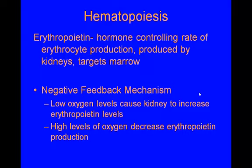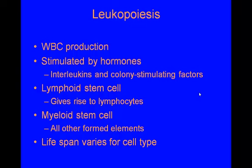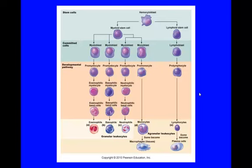Leukopoiesis is white blood cell production, stimulated by hormones such as interleukins and colony stimulating factors. The lymphoid stem cell gives rise to only lymphocytes. The myeloid stem cell makes all other white blood cells, and the lifespan varies for each cell type. The hemocytoblast at the top gives rise to the myeloid stem cell on the left — making eosinophils, basophils, neutrophils, monocytes, platelets, and red blood cells — and the lymphoid stem cell on the right, which makes only lymphocytes. This recording ends here; remember to listen to the second half.